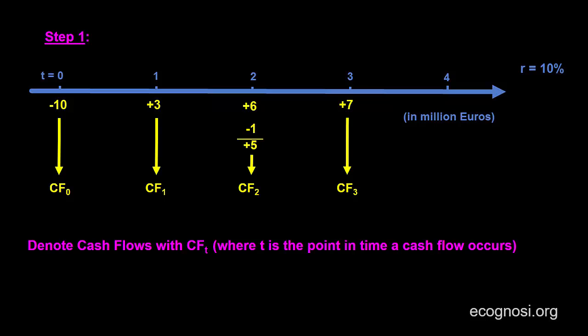To enhance your understanding, a step-by-step approach is being followed in solving this problem. And over here in the first step, we transfer the project cash flows on the timeline and also label them as CF sub T, where T depends on when a cash flow occurs.